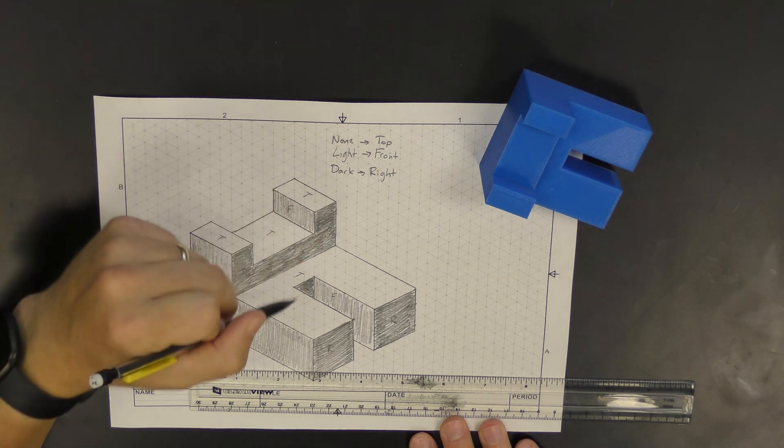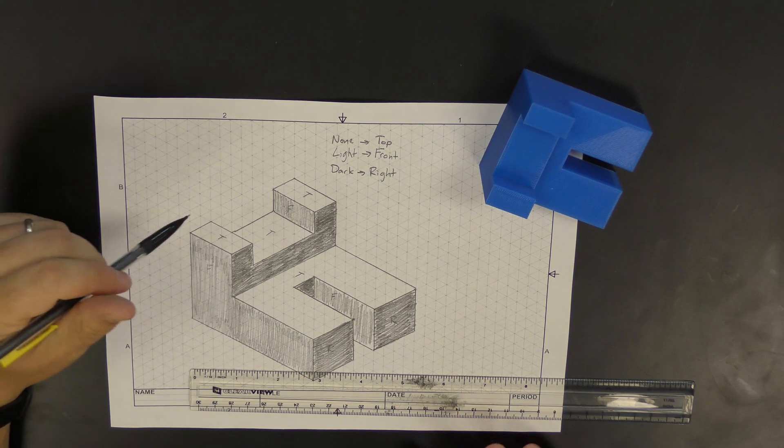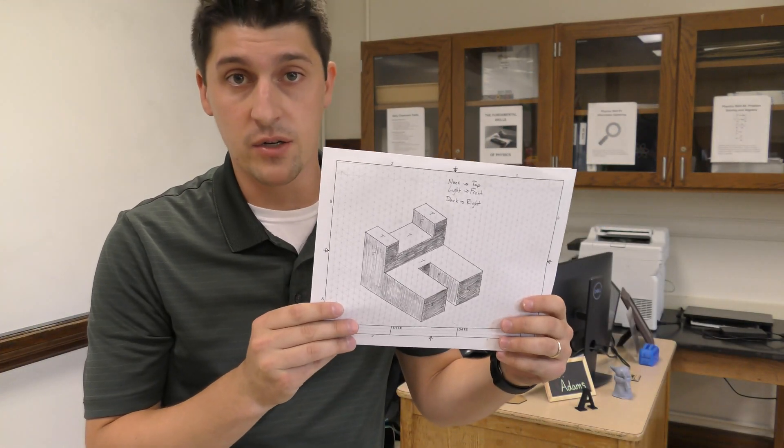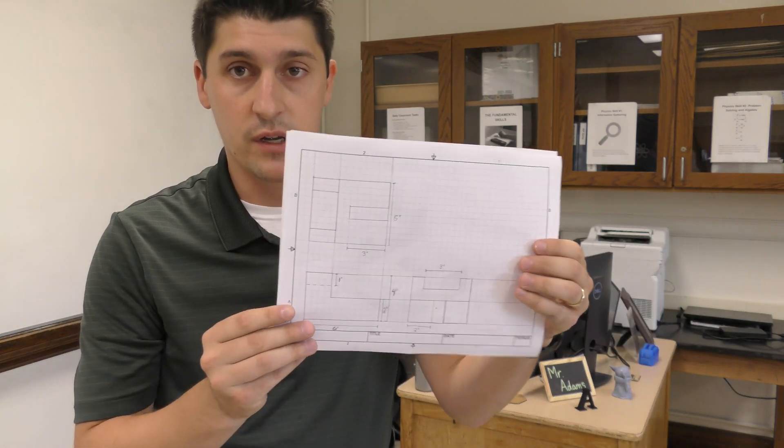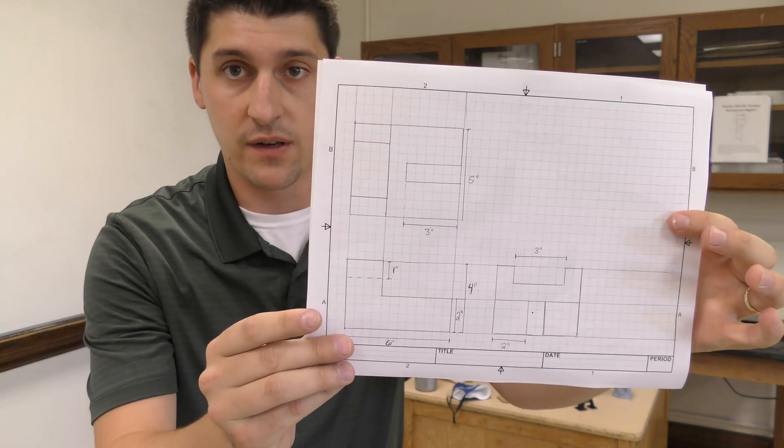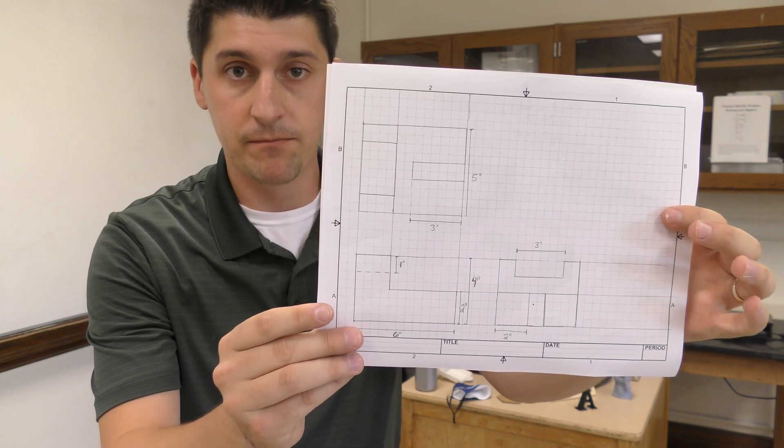And that's it. Our isometric sketch is complete. So next time, we'll talk about how we go from our isometric sketch to a multi-view drawing, such as this one with a front, top, and right side view. See you next time.